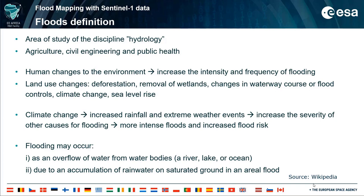Flooding may occur as an overflow of water from water bodies such as a river, lake, or ocean, where the water overtops or breaks levees resulting in water escaping its usual boundaries. Or it may occur due to an accumulation of rainwater on saturated ground in an areal flood. Changes in the size of a lake or water body due to seasonal precipitation and snow melt are unlikely to be considered significant unless they flood property or drown domestic animals.